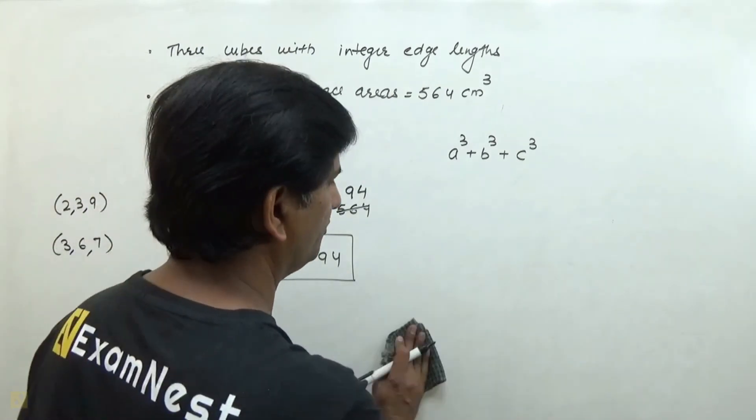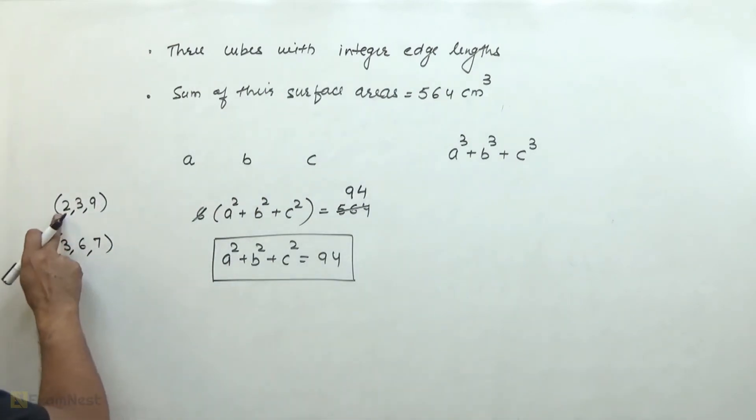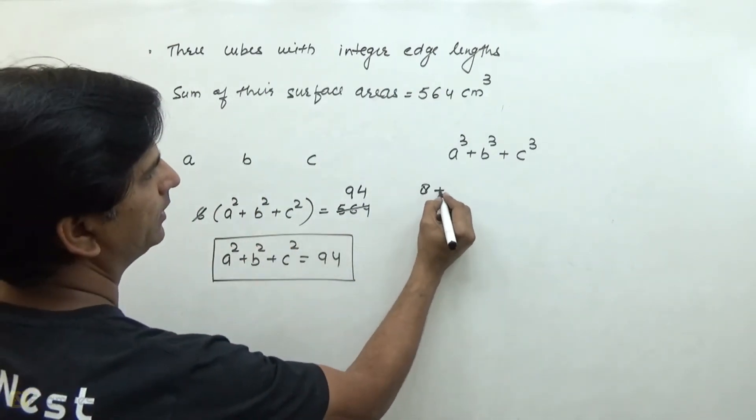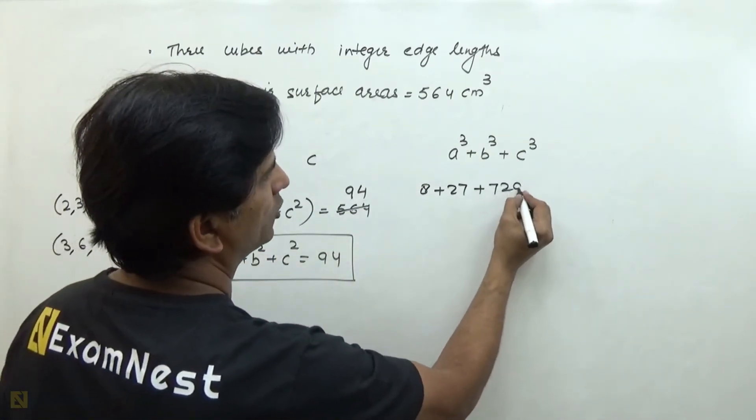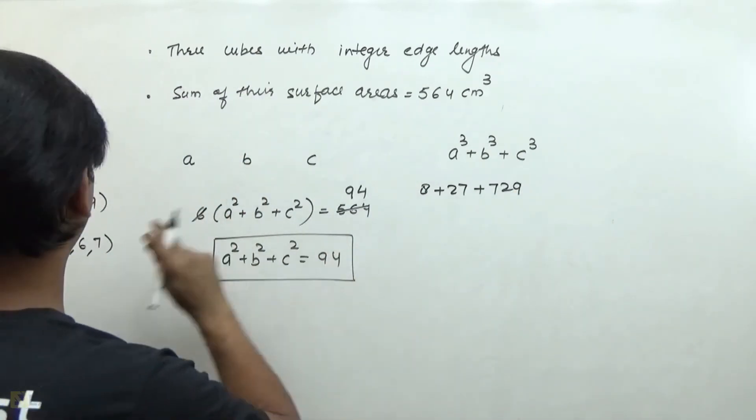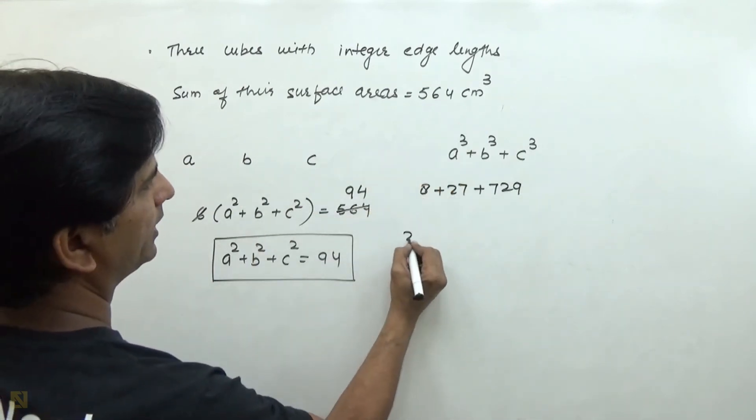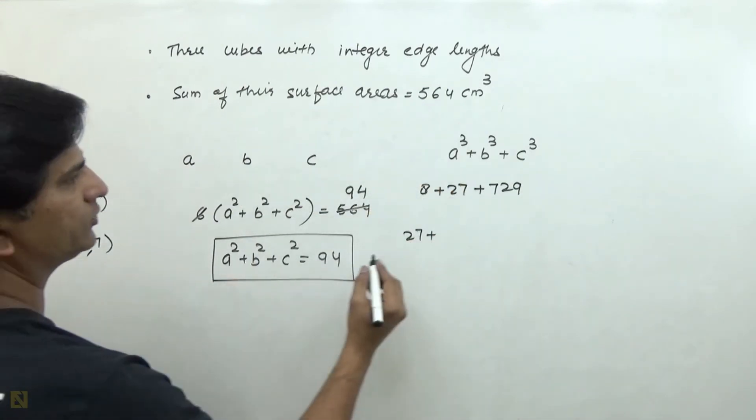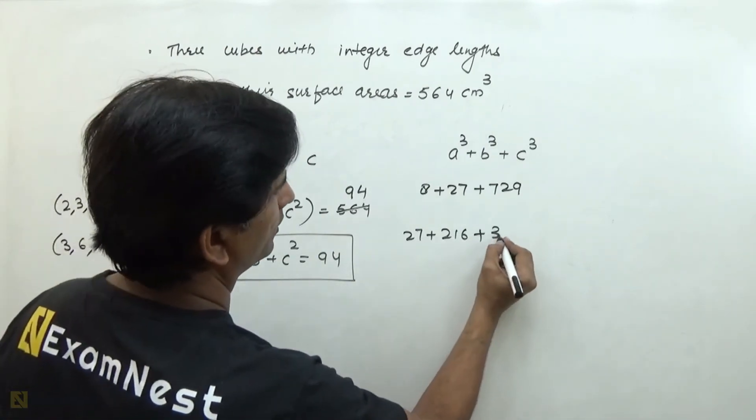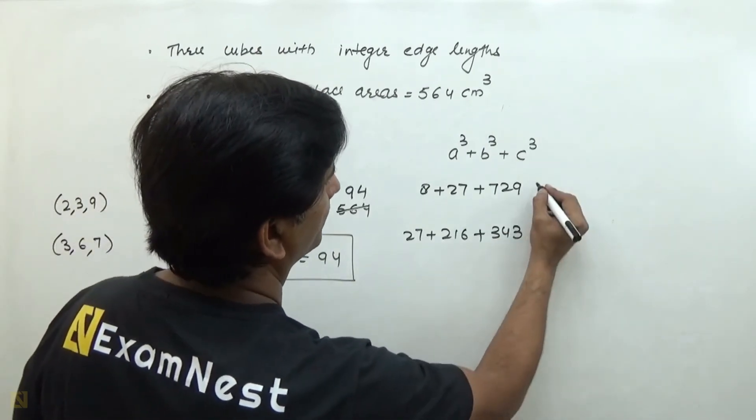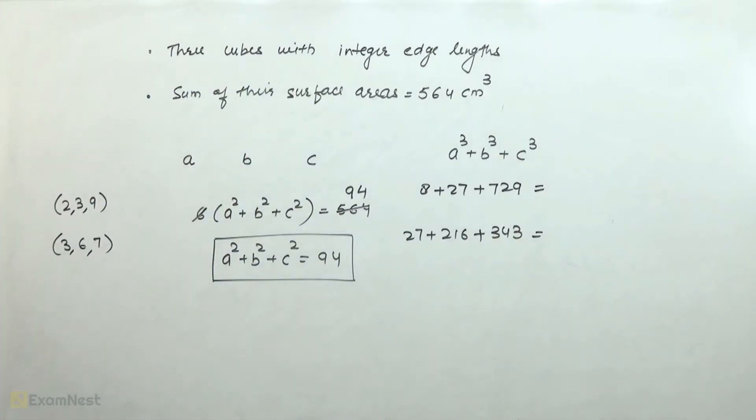Now we need to take the volume. If we consider this case, then 2³ is 8, 3³ is 27, and 9³ is 729. We need 3³ which is 27, 6³ is 216, and 7³ is 343. And then if we add both cases, we have the values.